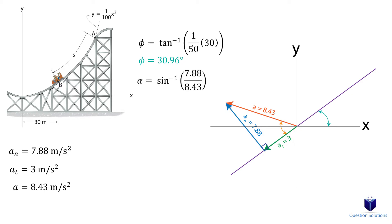The hypotenuse is 8.43 and the opposite length is 7.88. So it's the sine inverse of 7.88 divided by 8.43, which gives us 69.19 degrees.